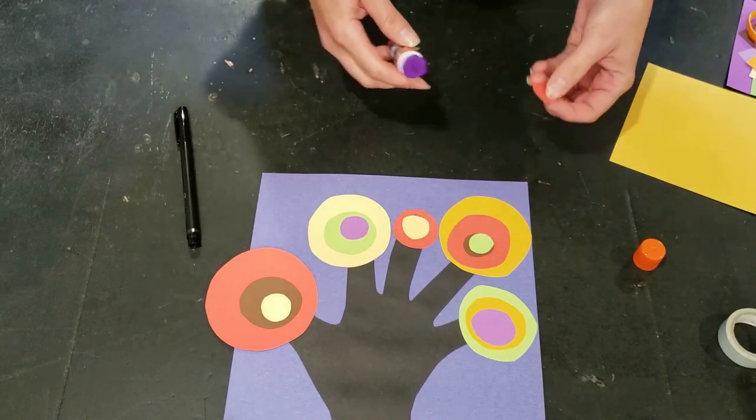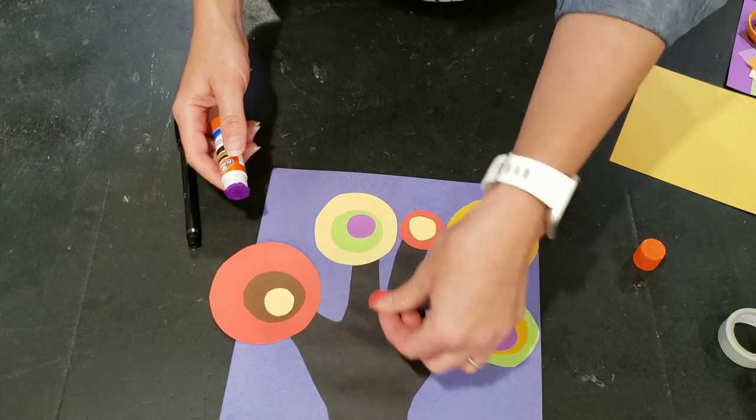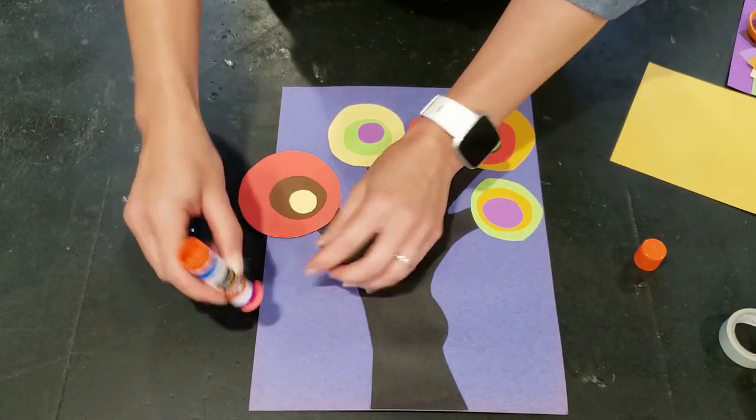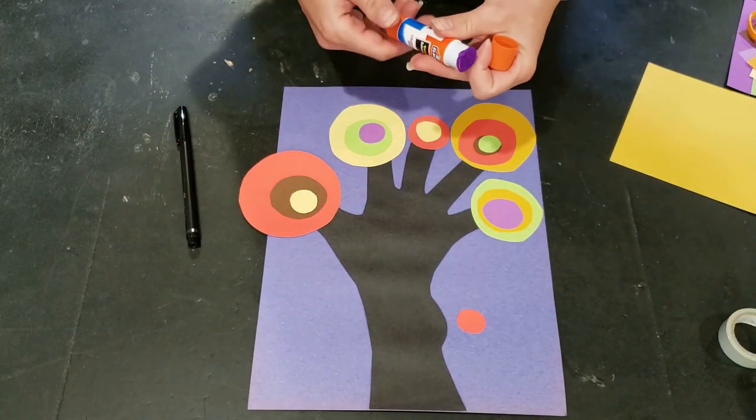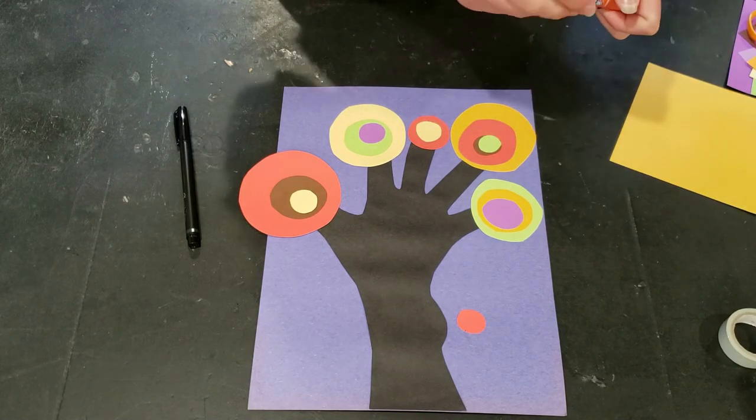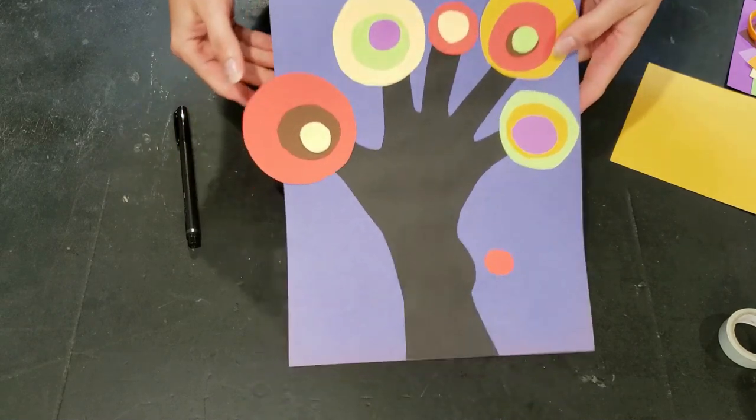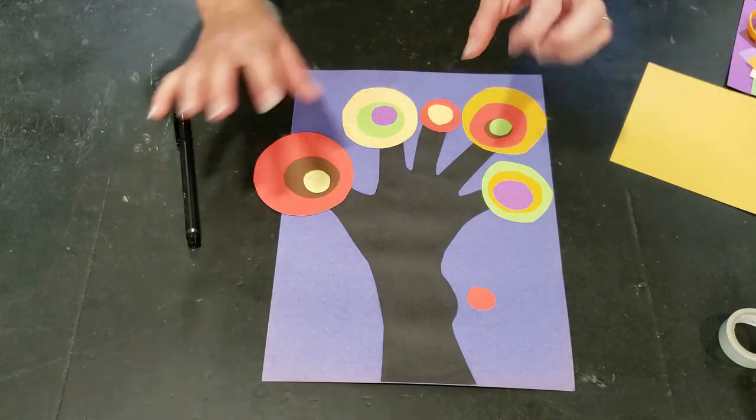And there we have it, a really beautiful, I'm going to make one falling down here on the ground. Falling down, maybe falling down. You could add a few to the side if you want. Whatever you like to do. And there you have it, our beautiful Kandinsky concentric circle inspired autumn tree. Thanks for joining me today, friends. Stay creative. Bye-bye.